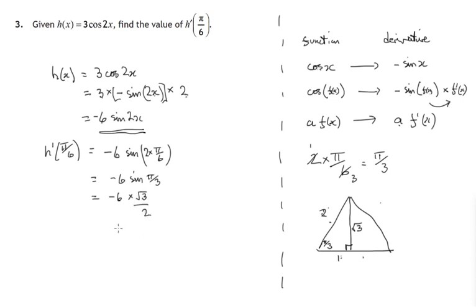So there's one last little cancelling goes on, 2 into 2 is 1, 2 into 6 goes 3, so negative 3 there. So we'll get negative 3√3 as the value of h'(π/6).